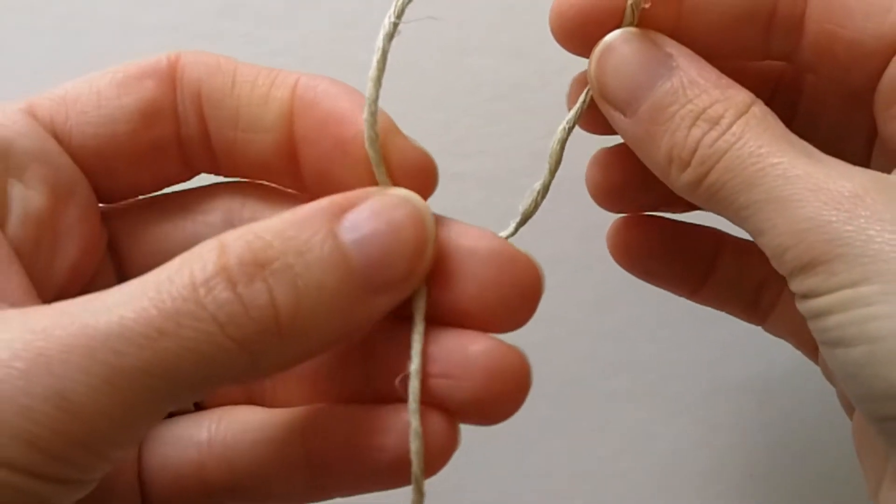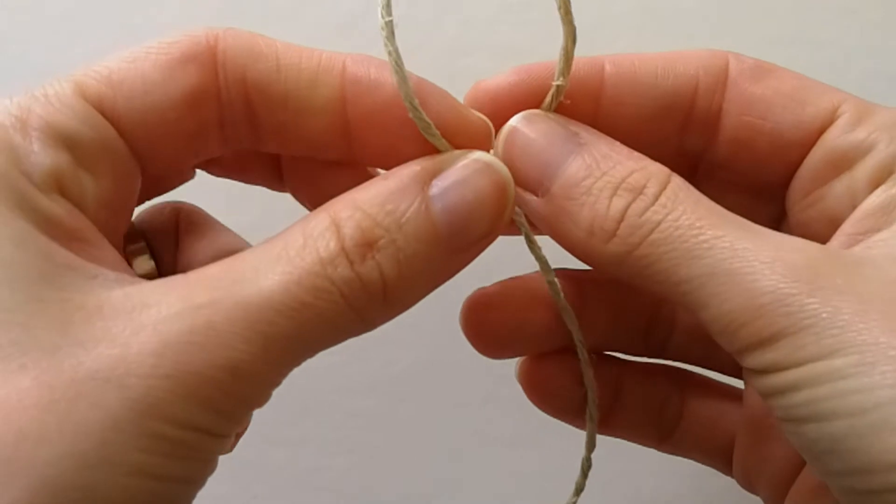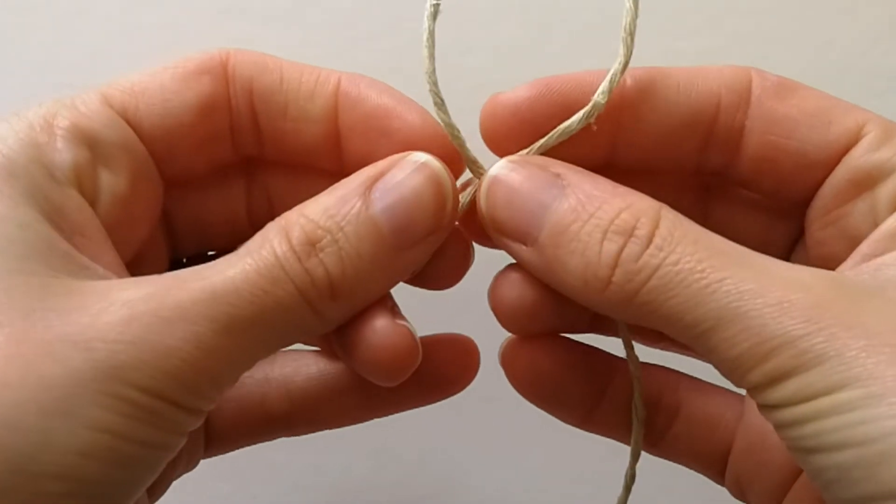Starting with the end of the yarn in your right hand, cross the left side over the right so that you have a loop.